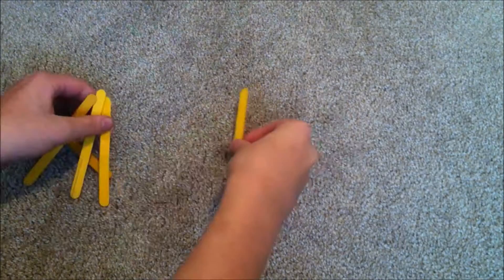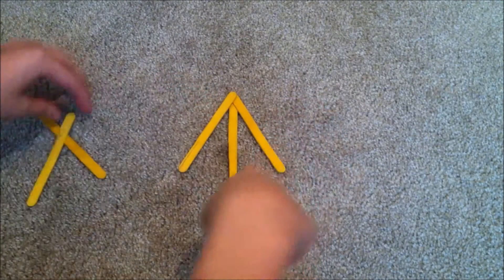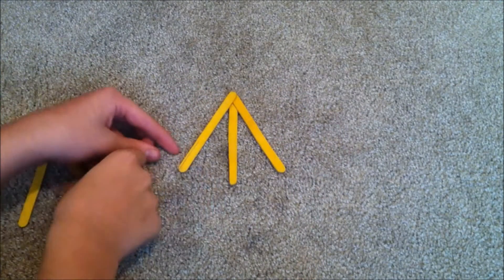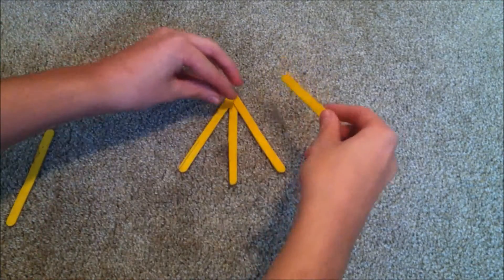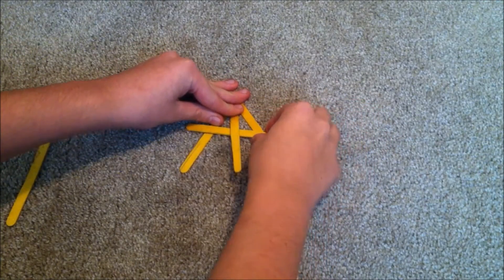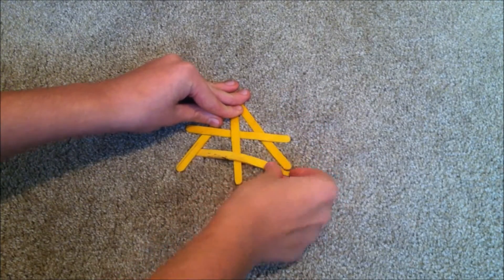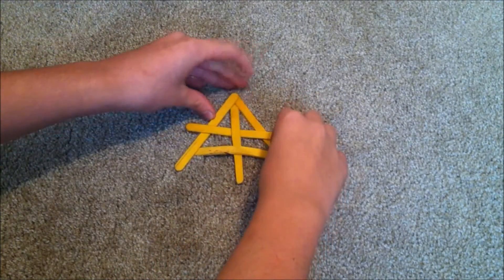This next one you need five sticks. Align them with the middle one on the bottom, just like I've done here. Take this next one, leave it under the middle one and over the two side ones. The next one, do the opposite—under the two side ones and over the middle one.